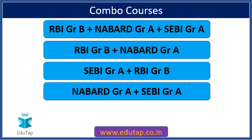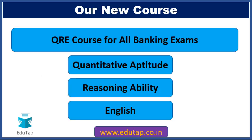Apart from separate courses for individual examinations, we also have combo courses. We have a combo for RBI Grade B, NABARD Grade A, and SEBI Grade A, as well as other combinations. We also have a new QRE course, which stands for Quantitative Aptitude, Reasoning Ability, and English — all aspects important for banking exams are covered in this course.